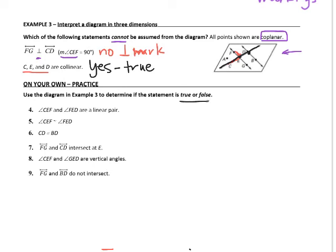Using the same diagram, for on-your-own practice numbers 4 through 9, state whether each statement is true or false. If a statement is false, explain why. Make sure you look at the diagram carefully, and if you have any questions please ask in class. Use the space below to write any questions you might have.